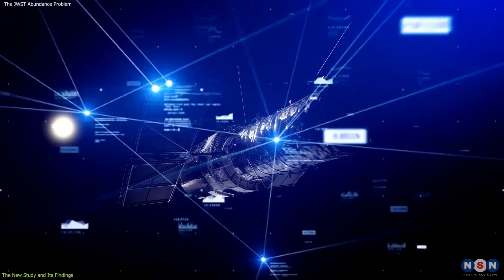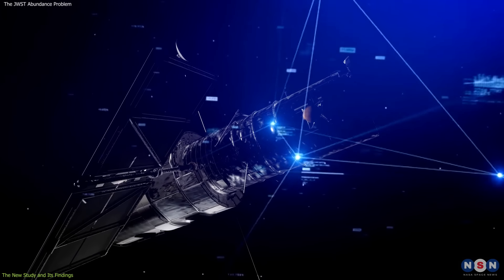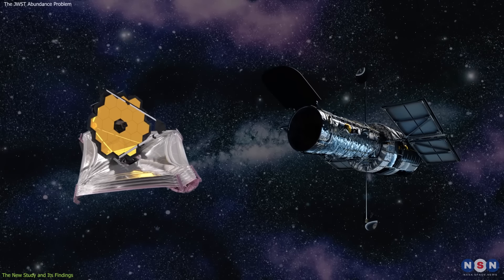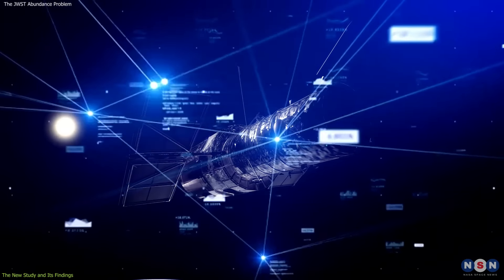The study then compares the current Hubble data with the predictions of various cosmological models and finds that none of them can fit both the James Webb and the Hubble data simultaneously.